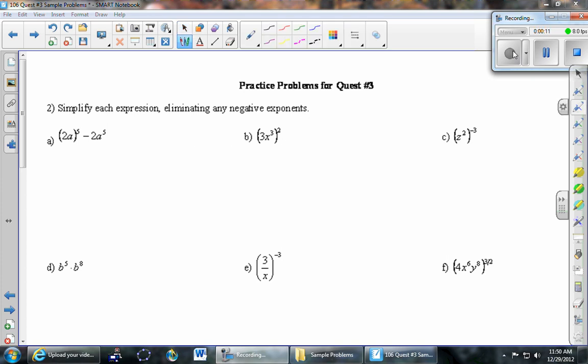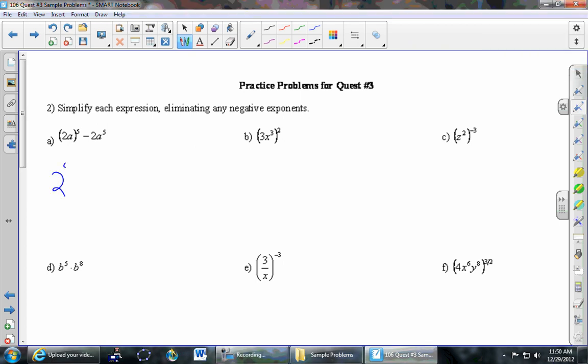Part A: 2A to the fifth minus 2A to the fifth. So the thing in the parentheses has a five on the outside. That five is going to come in and hit both of the pieces inside. So that two is going to have a fifth on it, and so is the A. That's really important that the two gets the fifth power as well as the A. And then I'll copy this thing over here.